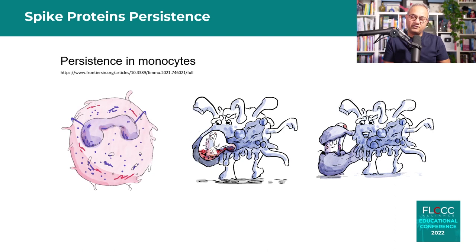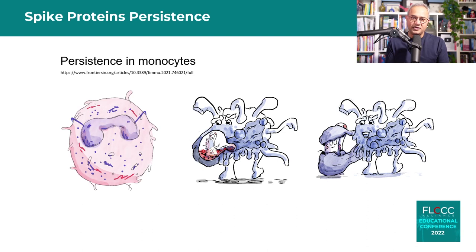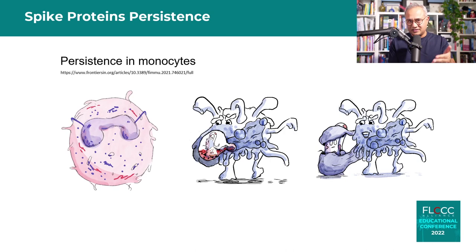These monocytes are usually patrolling the boundaries of our vascular or tissue barriers — including the blood-brain barrier, blood-thymus barrier, and blood-testis barrier. When dysregulated monocytes cause inflammation at these barriers, those barriers become inflamed and compromised.